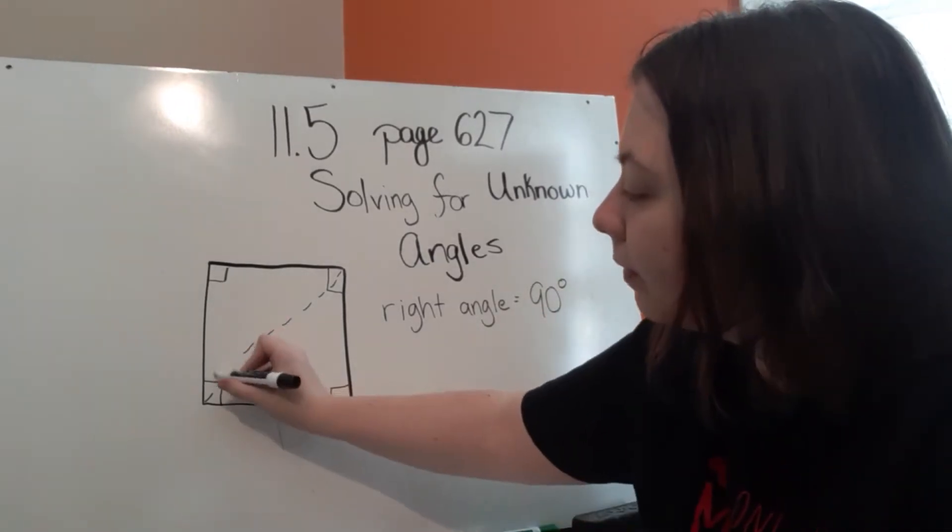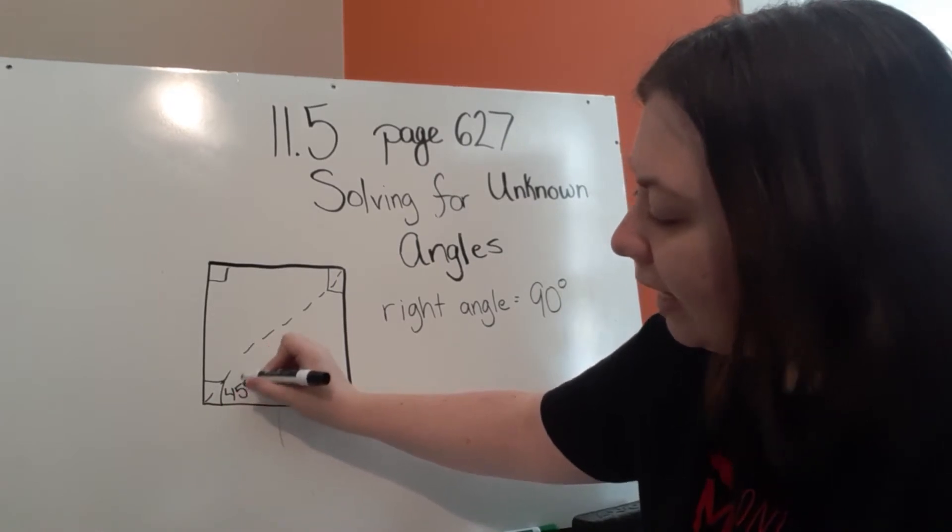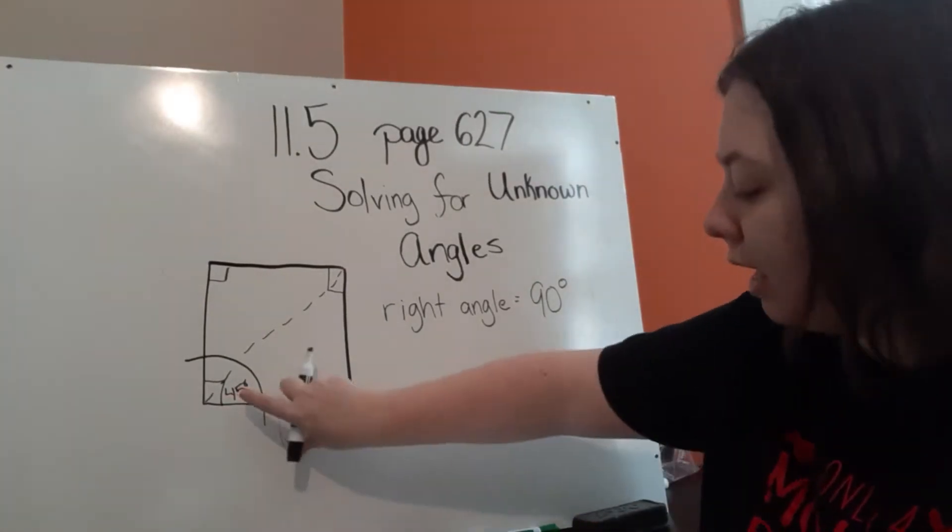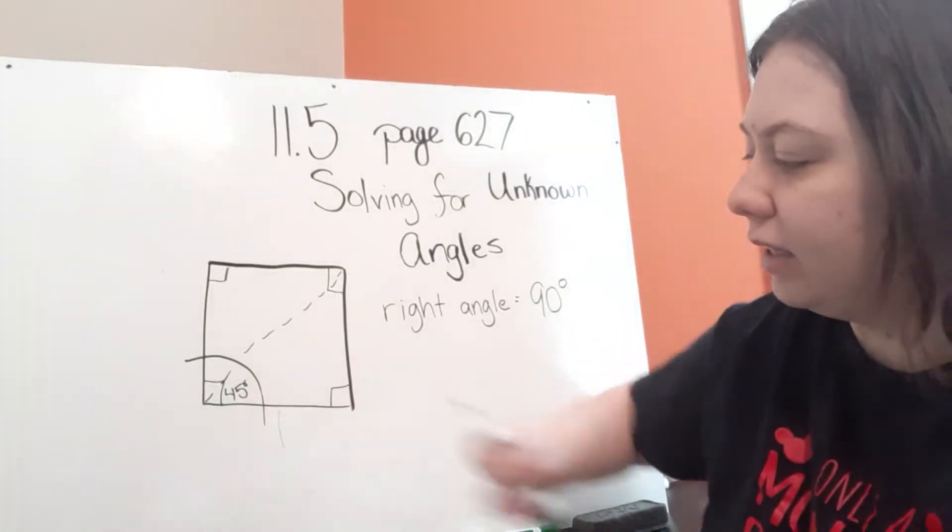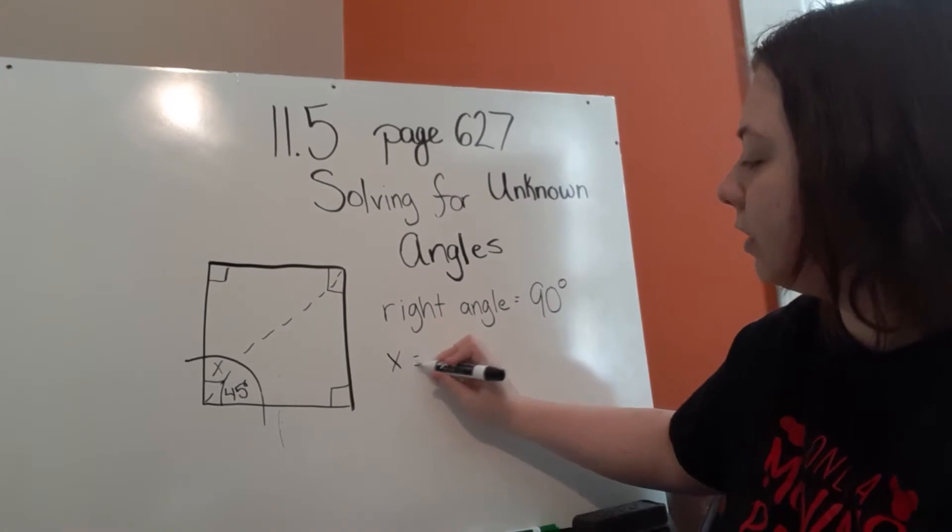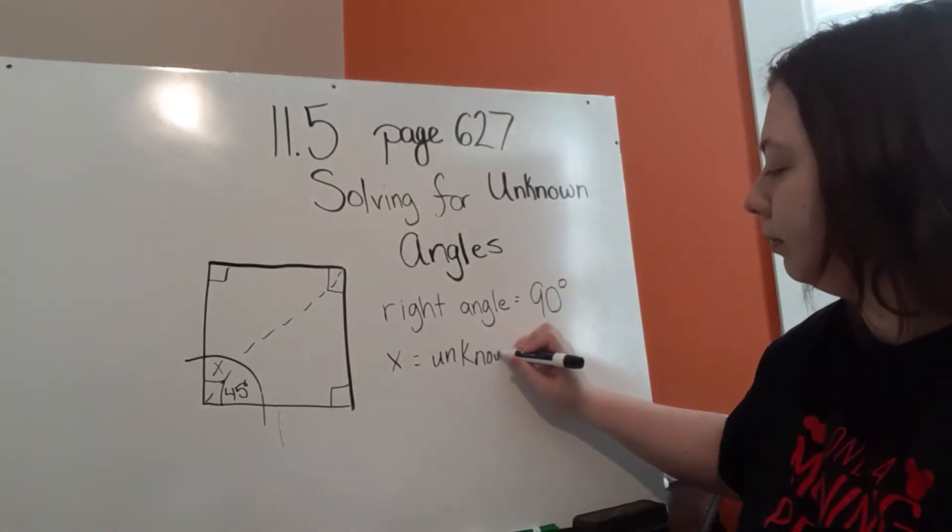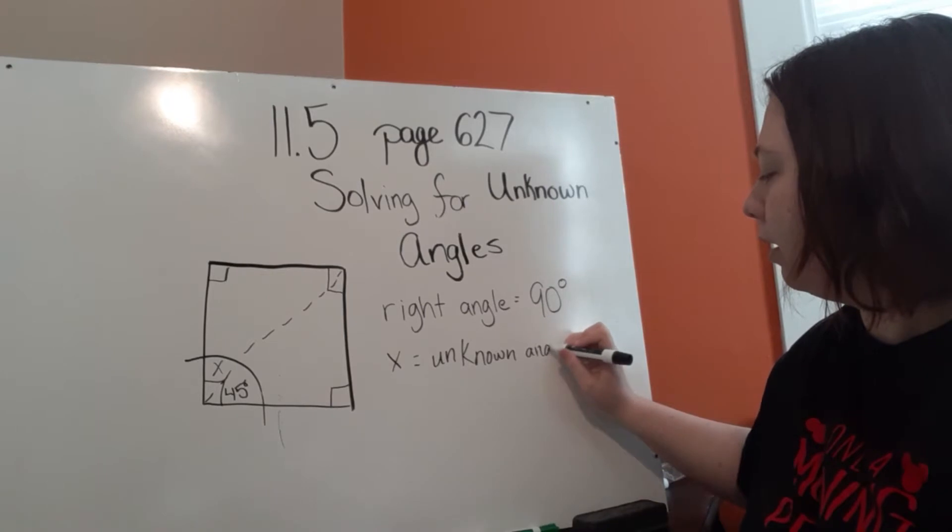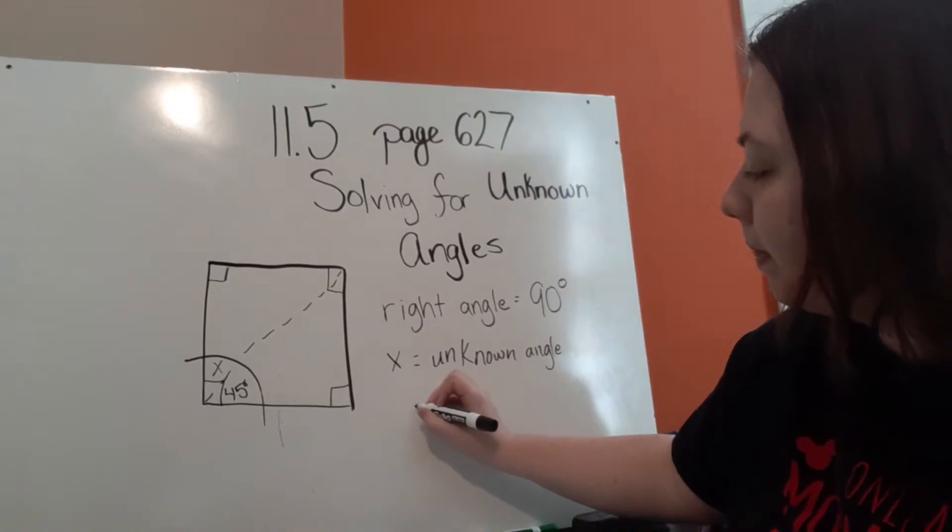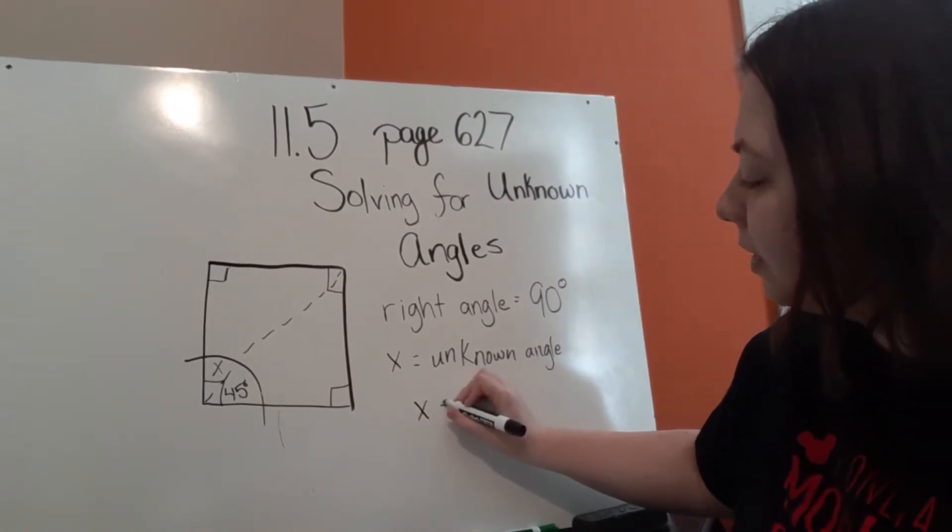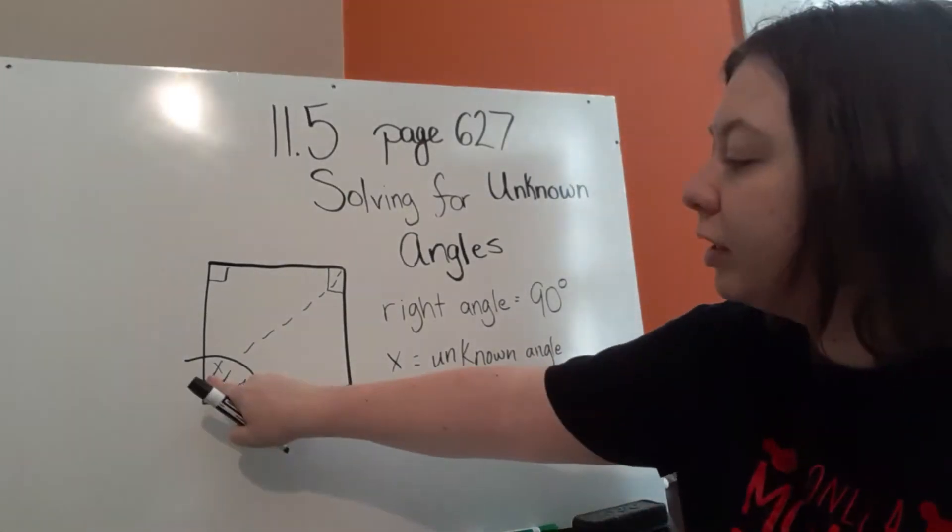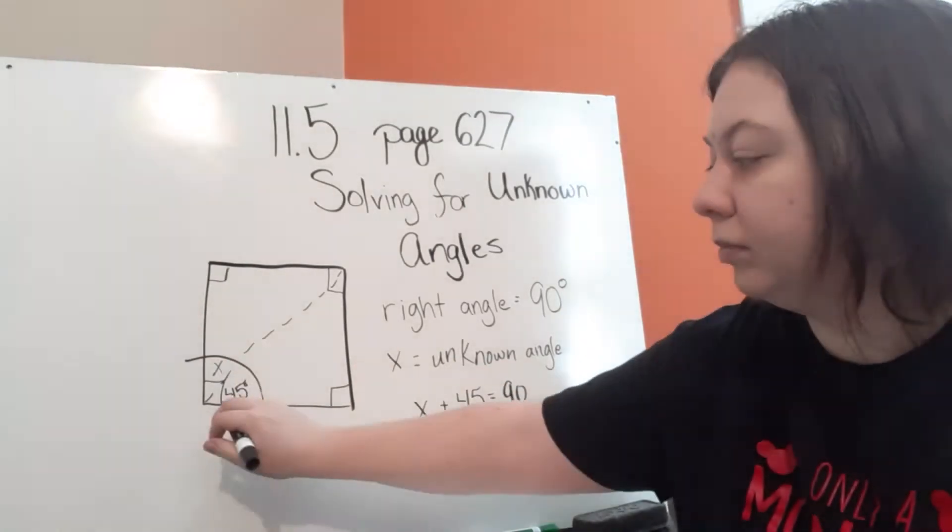So if we are splitting this angle in half, we already know it's 90 degrees, your book is telling you that one side is 45 degrees and the other is X. And that X represents our unknown angle. So in order to figure out what X is, well we already know that X plus 45 has to equal 90 degrees. Because we know that these two angles together give us the right angle.